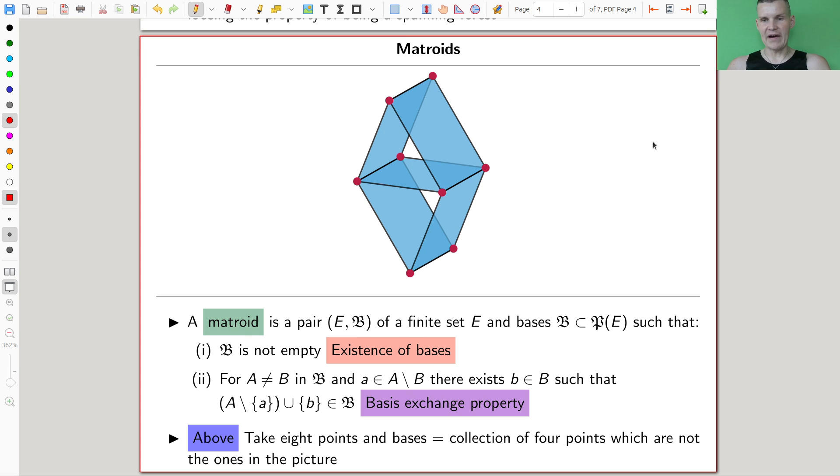It is a pair with a finite set, and whatever that is, usually something like an indexing set, the number of vertices or something, and something in the power set, which is really just the bases, such that, okay, whatever I choose shouldn't be empty. That's very good. And whenever I have something, I have this base exchange property.